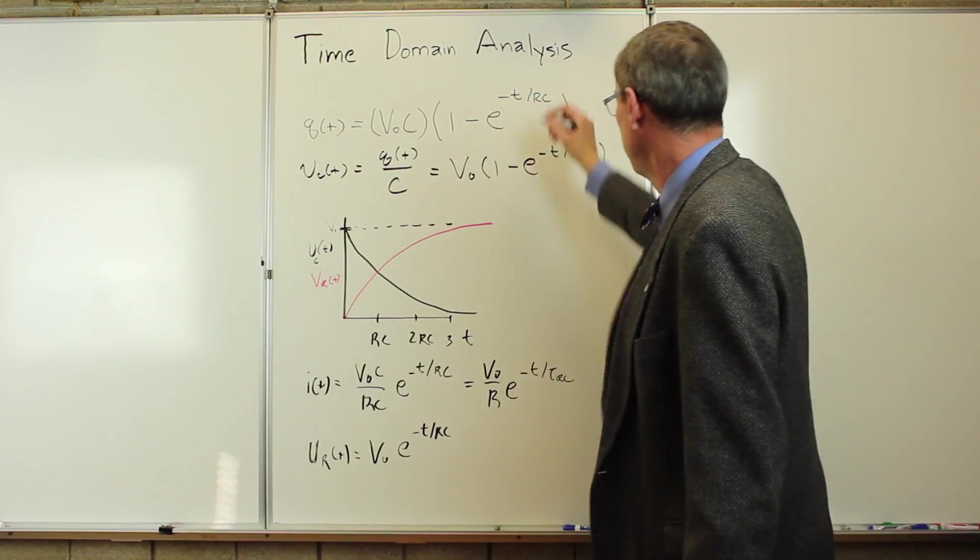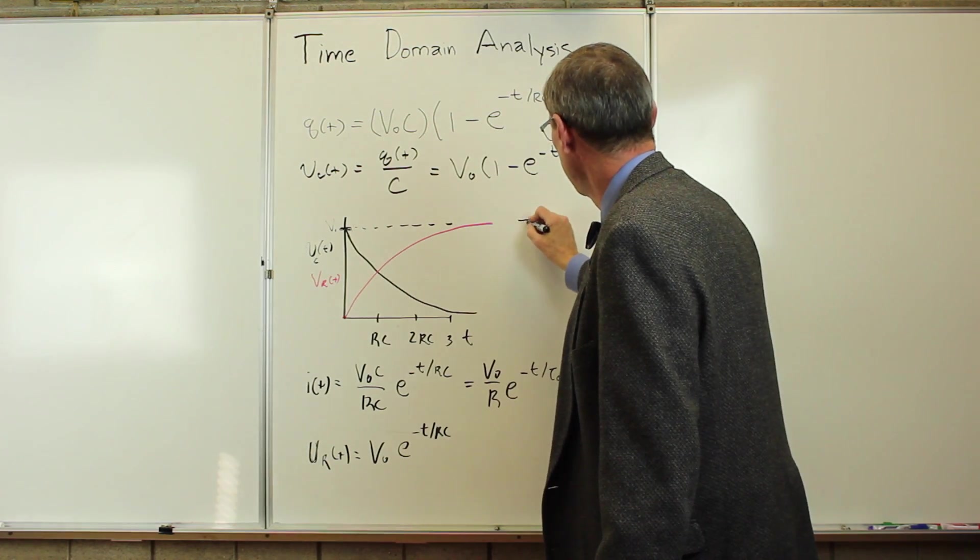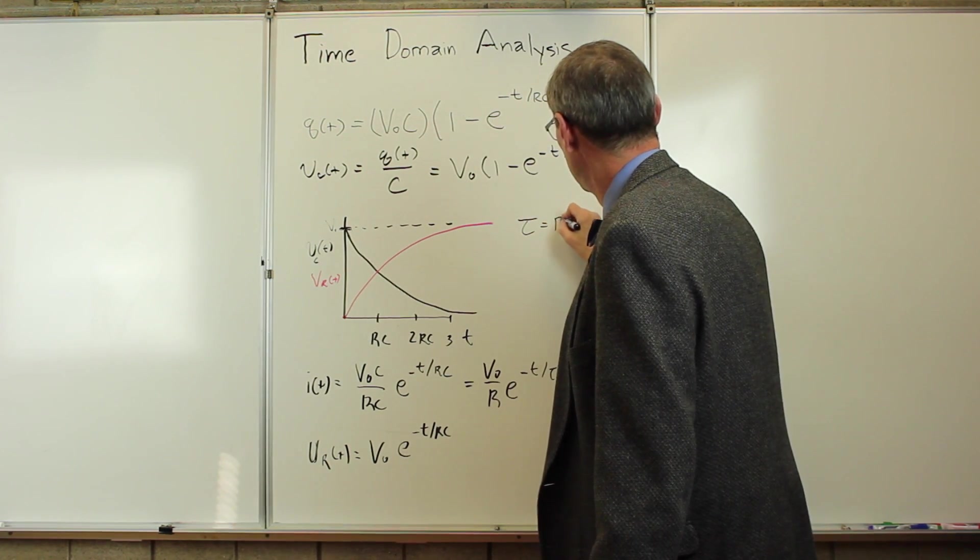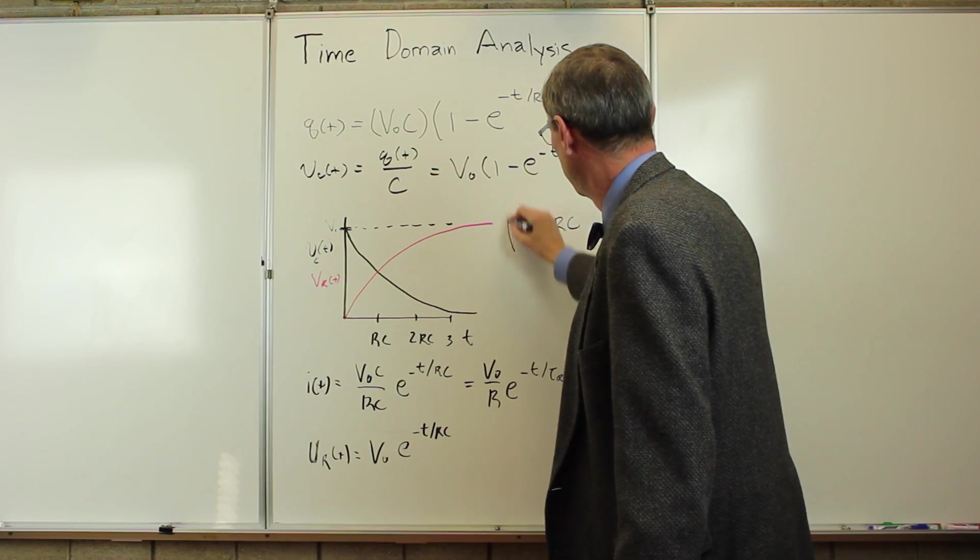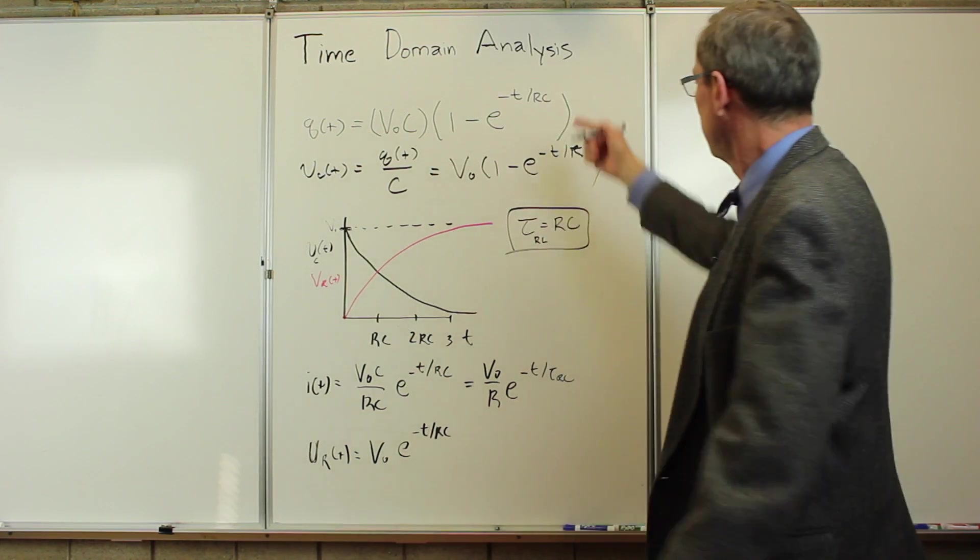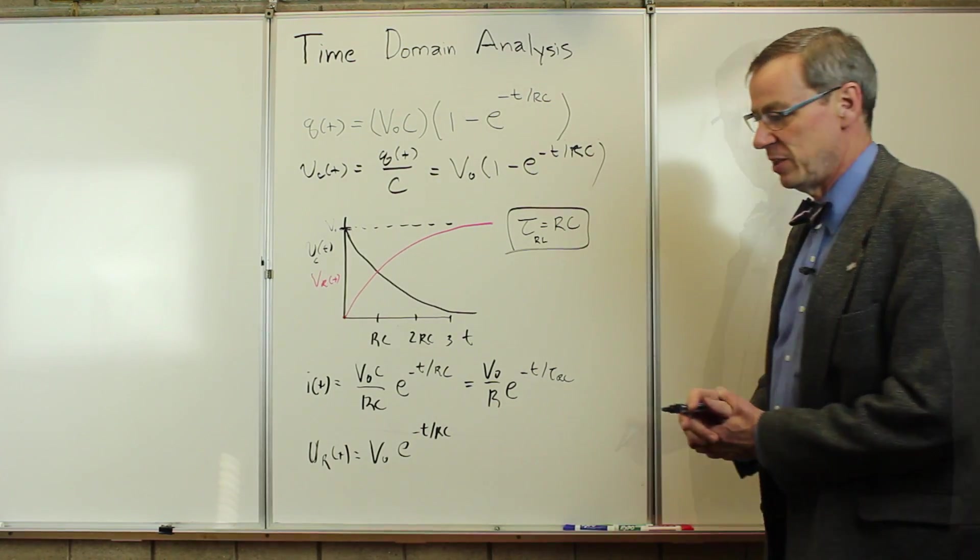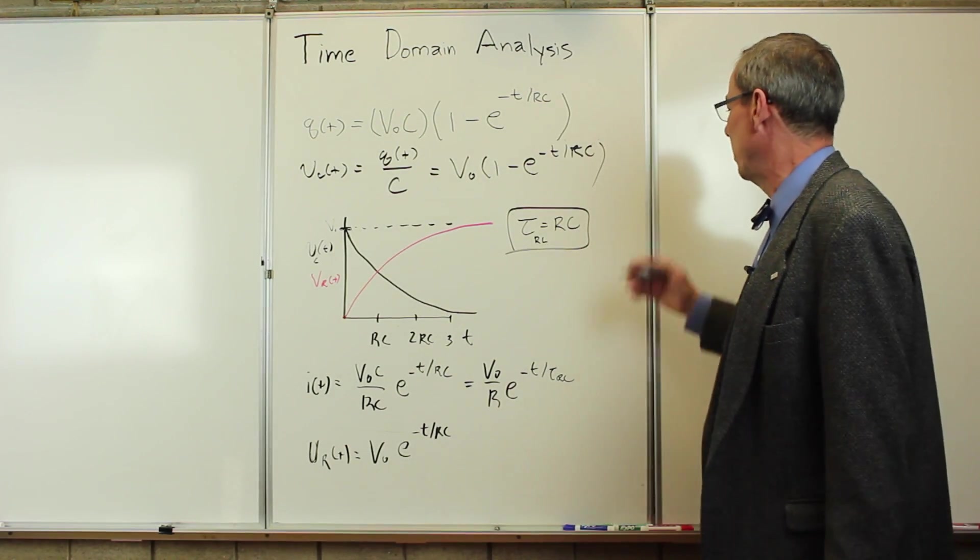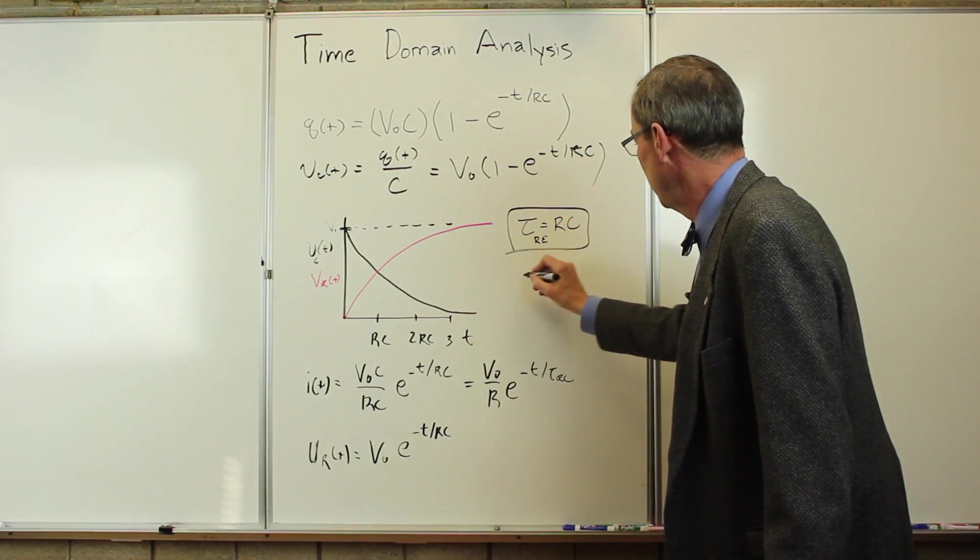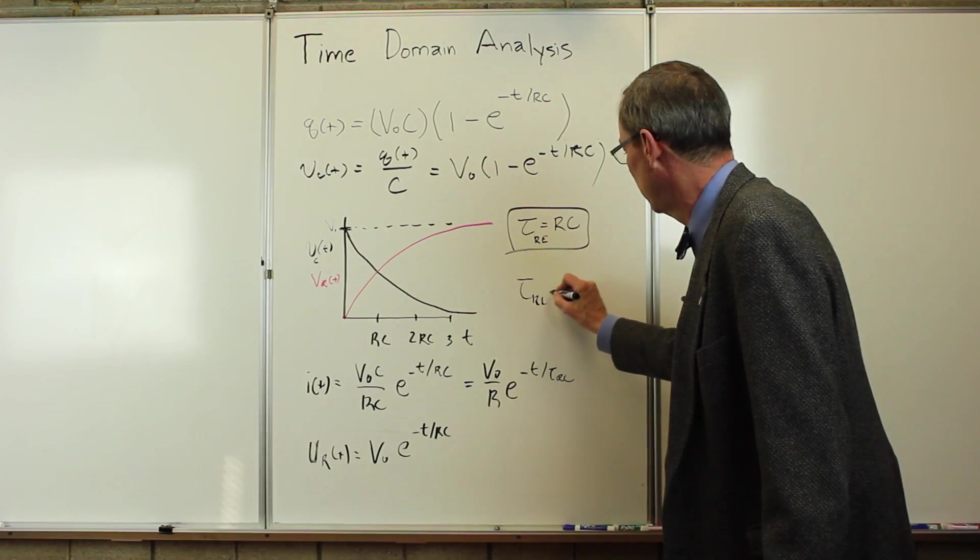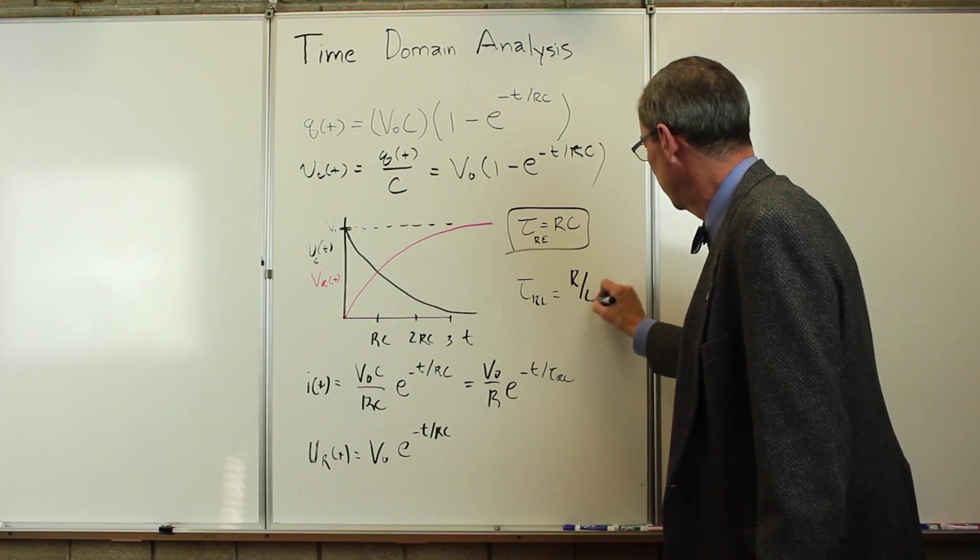So given that development there, there's one interesting thing we saw. There was a characteristic time, we called it tau, which was R times C. And this was an RC circuit, so we'll write it as tau_RC. There's a characteristic time for this circuit with an R and a C. If we had done this with an R and an L circuit, there would have been a characteristic time for an R and an L, not an R and a C. And that would have just been tau_RL equals L over R.